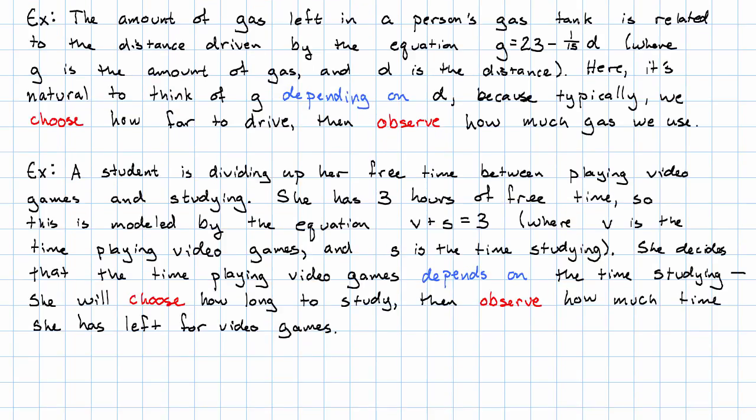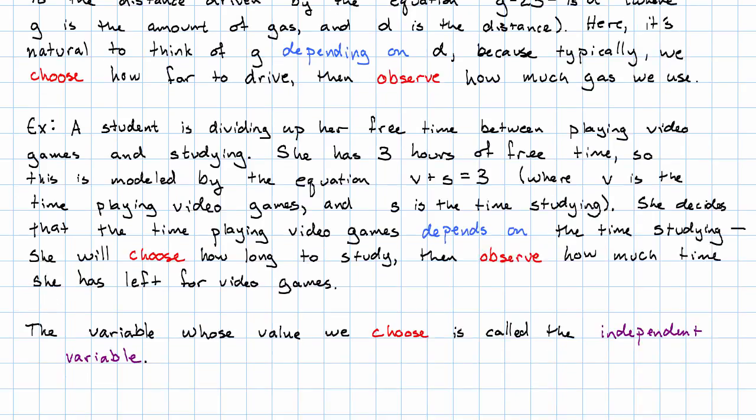So, the key idea here is that when we say that one variable depends on another, we're saying we're going to choose the value of one of the variables and then observe what the other variable has to be.